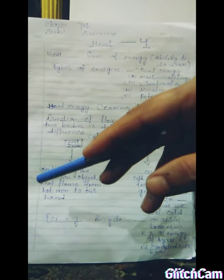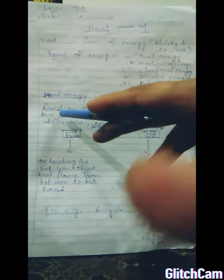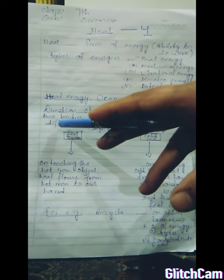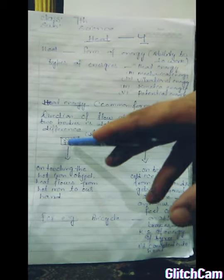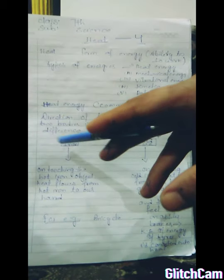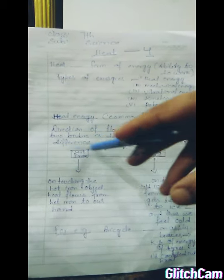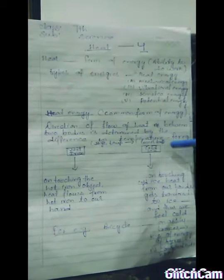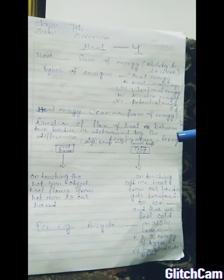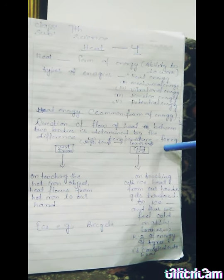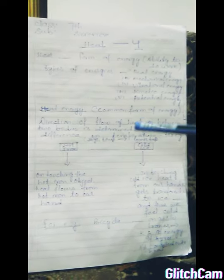Heat is a common form of energy. The direction of flow of heat between two bodies is determined by the difference in temperature.